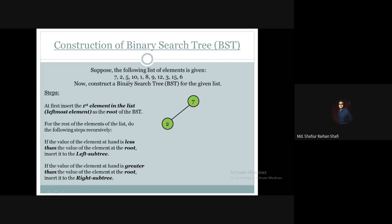Then we take 5. 5 is less than 7, so it will move down to the left subtree. We then look at the left subtree root, which is 2. 5 is obviously greater than 2, so 5 goes to the right subtree of 2, just like this.